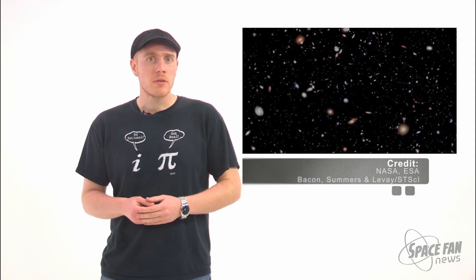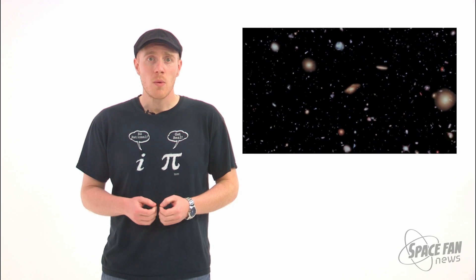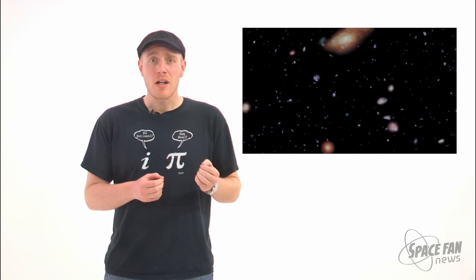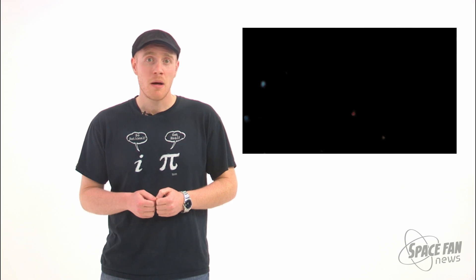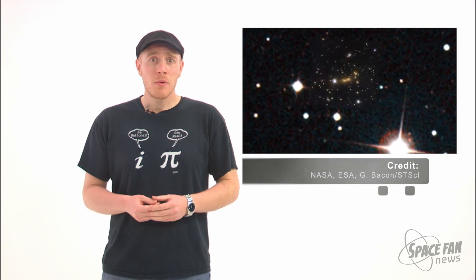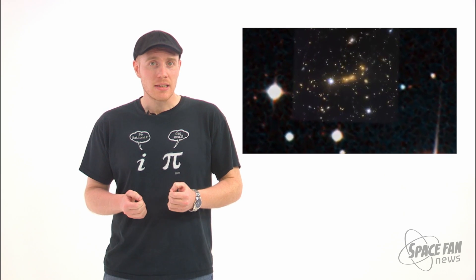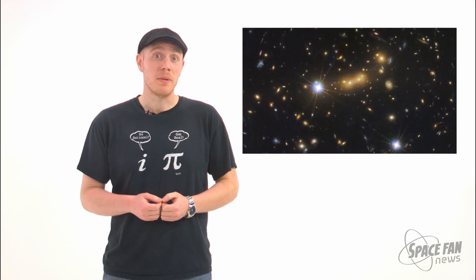The furthest we've been able to see in the optical wavelengths is around 13.2 billion years ago with the Hubble Extreme Deep Field, allowing us to see how the cosmos was doing some 435 million years after the Big Bang, but that's about to change. In fact, it already has. Hubble has already observed light from a galaxy that is around 420 million years after the Big Bang.